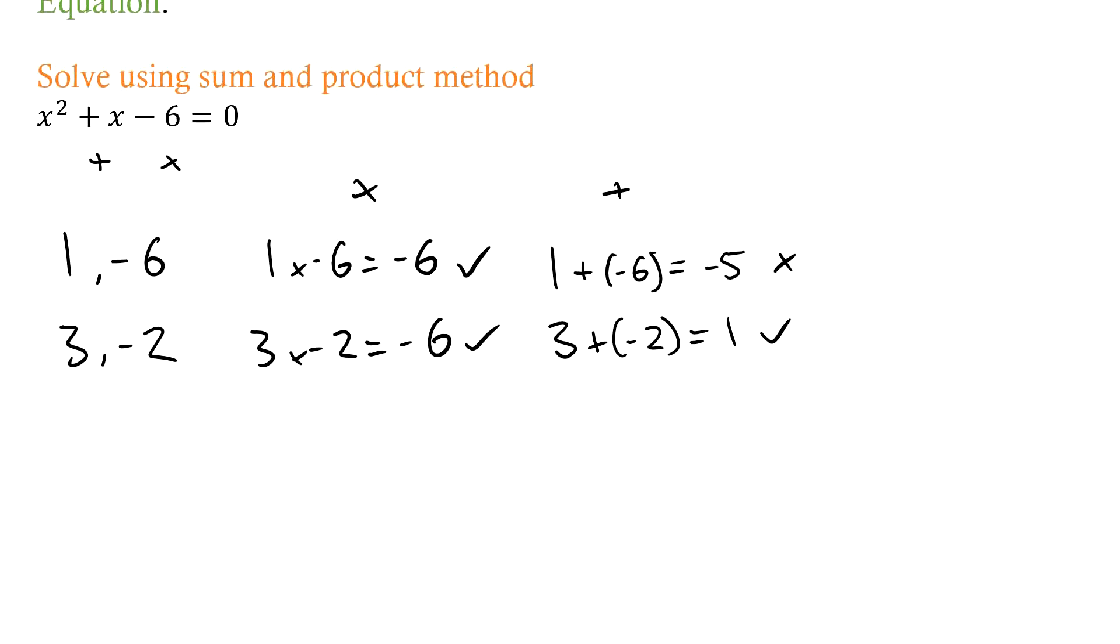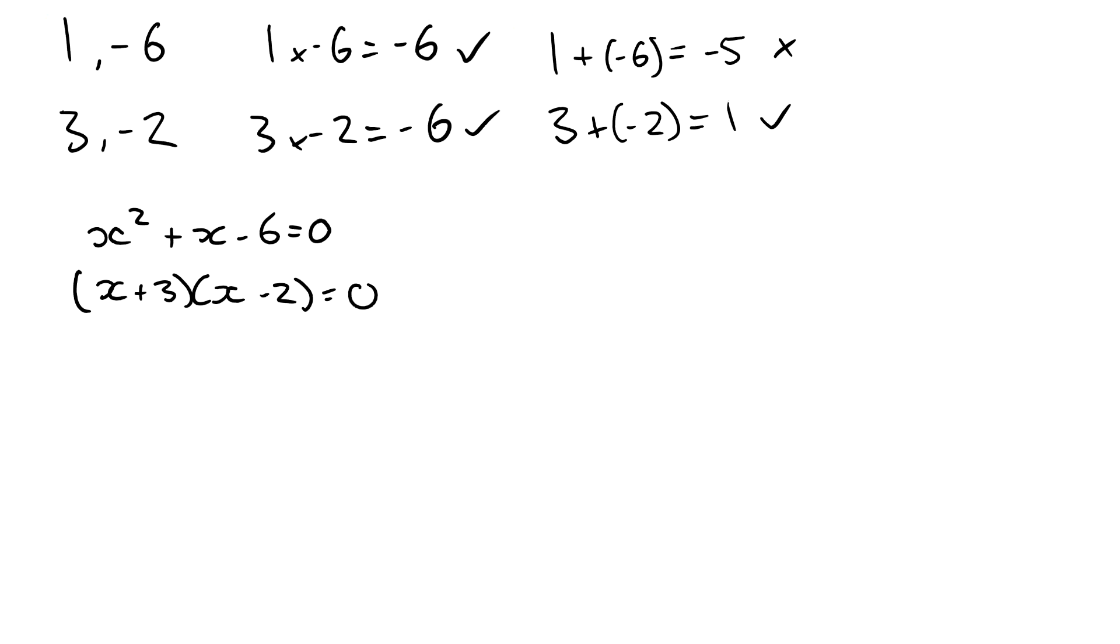I know that x squared plus x minus six equals zero. We can factorize that down to x plus three times x minus two equals zero. Then what I want to do is solve each of the bracketed areas separately because that'll tell me my solutions. If one of those bracketed areas equals zero, then the whole thing has to equal zero.